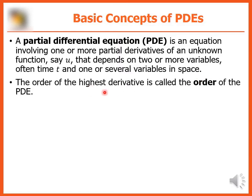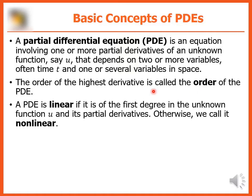The order of the highest derivative is called the order of the PDE. A PDE is linear if it is of the first degree in the unknown function u and its partial derivatives. Otherwise, we call it non-linear.